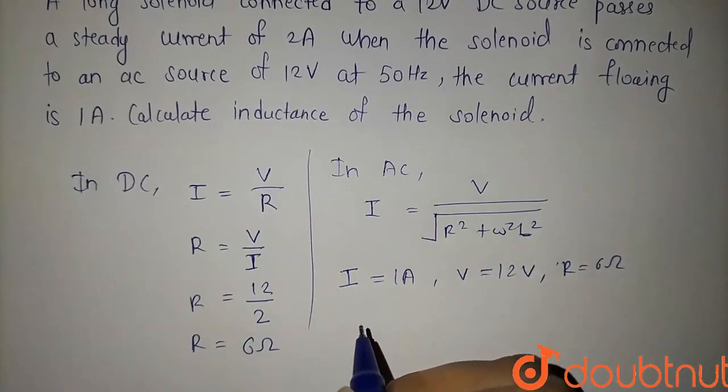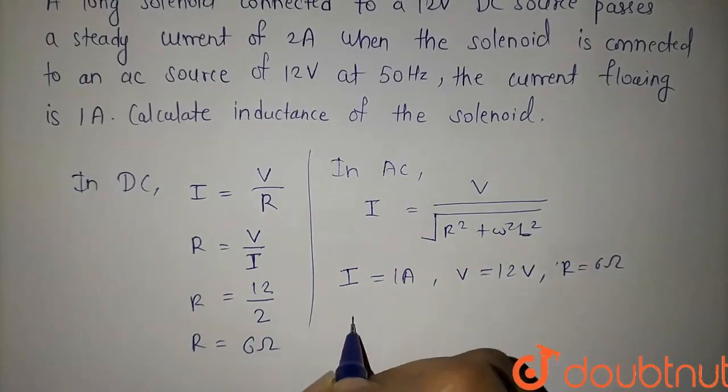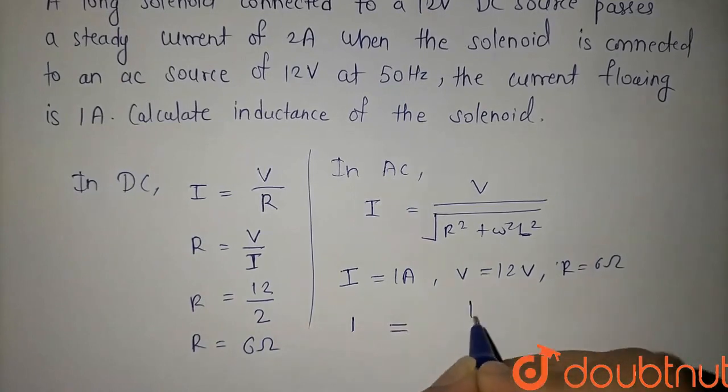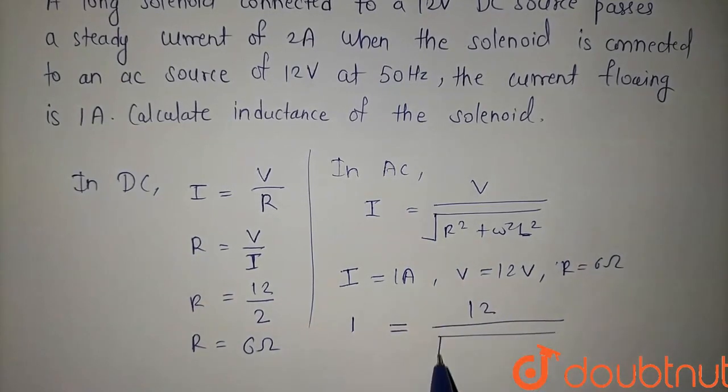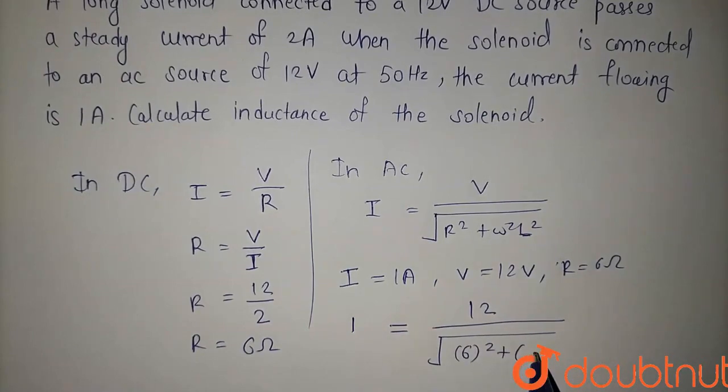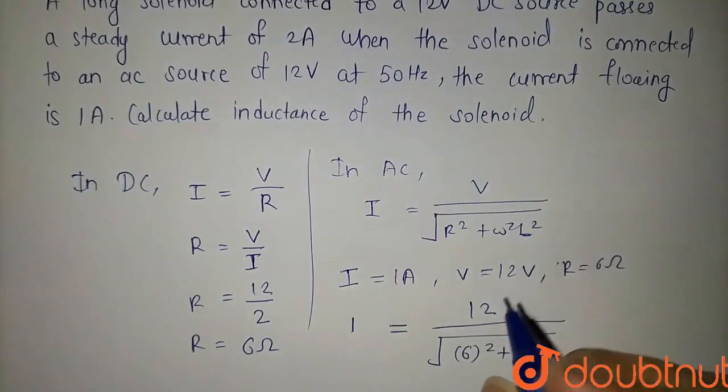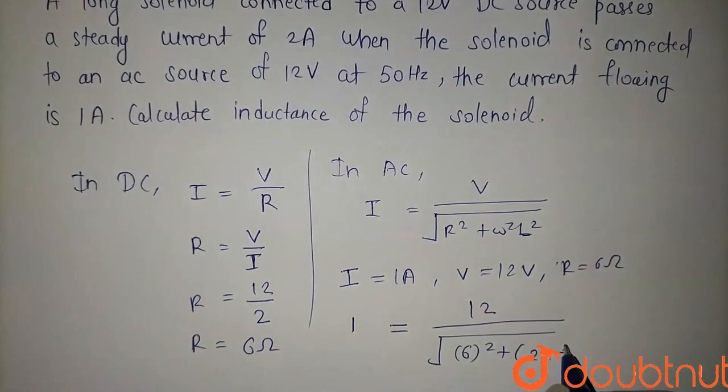Current is 1 ampere, which equals 12 volts divided by square root of R squared—6 squared—plus omega squared L squared. Here omega is 2π times frequency, so 2πF. F is 50 hertz, so we have 2πFL squared.